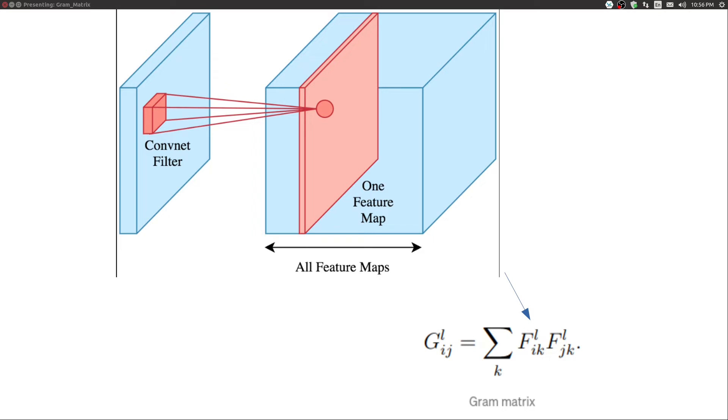In other words, the lesser the dot product, the lesser the two features co-occur, and the greater the dot product, the more they occur together. This in a sense gives information about an image style or its texture and zero information about its spatial structure since we already flattened the feature and perform dot product on top of it.